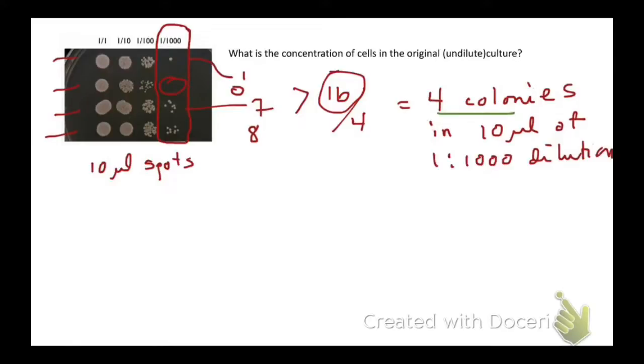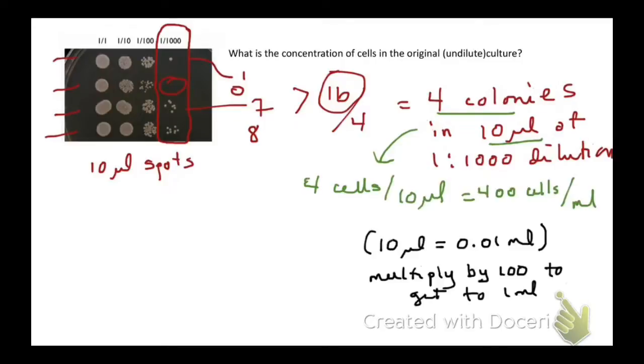Four colonies translates to 4 cells that gave rise to those colonies. We have it in 10 microliters, so the first thing we want to do is go with the convention. We typically report cells per mil, so instead of 4 cells in 10 microliters, we're going to convert to 400 cells per mil. We do that because 10 microliters equals 0.01 mil, and we can multiply 0.01 mil by 100 to get to 1 mil. That means we multiply this by 100 to get 400 cells per mil.